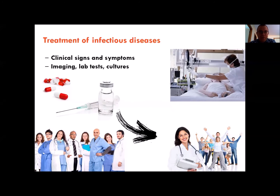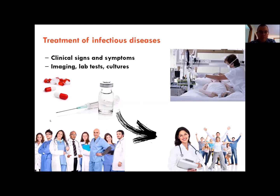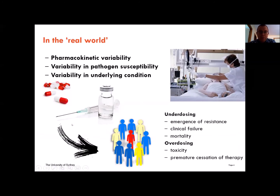If we've done all our evaluation of clinical signs and symptoms and diagnostic testing and selection of the drug, we of course hope for a happy patient and family at the end. But life is a little bit different. We have pharmacokinetic variability, pathogens may have different susceptibility, and the underlying condition may affect outcome, especially in immunocompromised patients. So we have to deal with underdosing and the risk of emergence of resistance, clinical failure, and perhaps mortality.